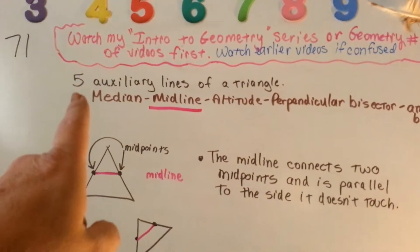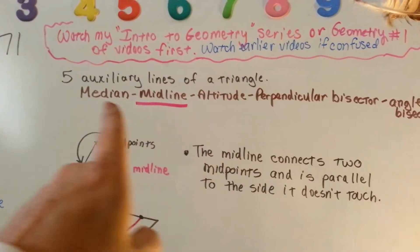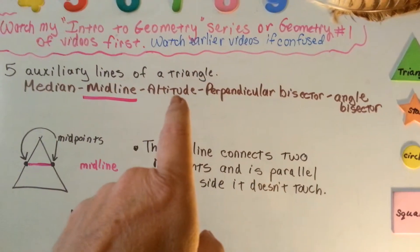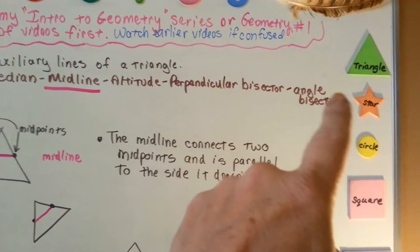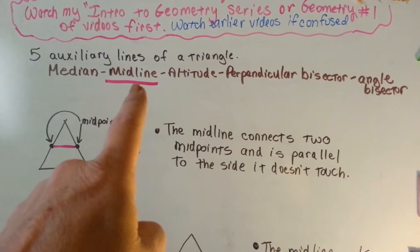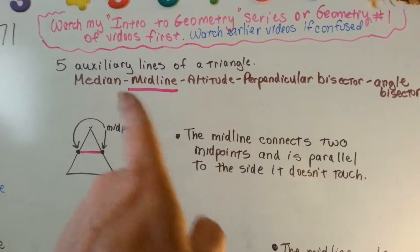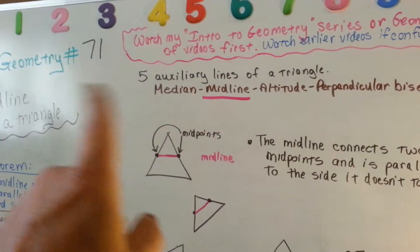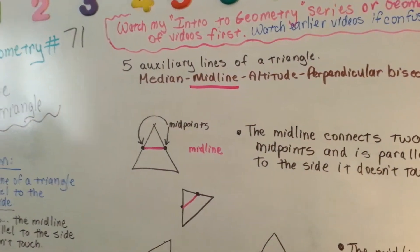Here are the five auxiliary lines of a triangle: the median, the midline, the altitude, the perpendicular bisector, and the angle bisector. This is where we're at right now. If you don't understand this, you need to go back a few videos to catch up so that you're not missing anything.